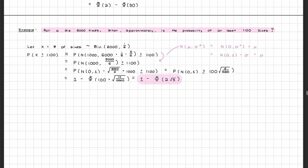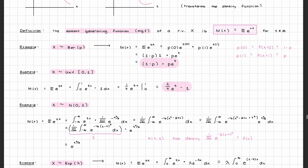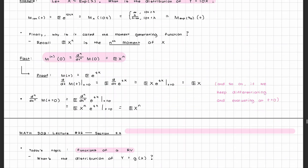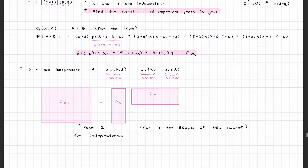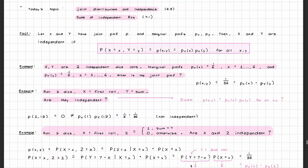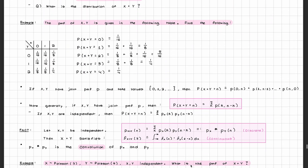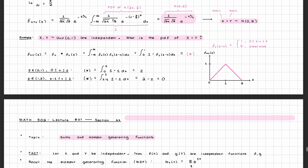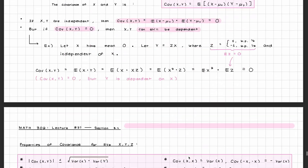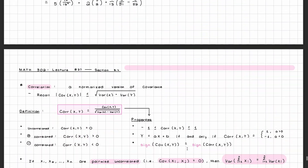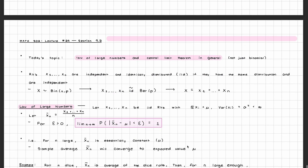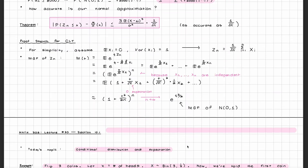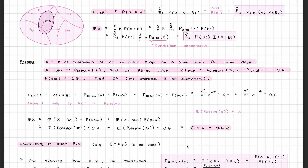Next we cover the moment generating function, which takes a random variable and transforms it into a function of a different random variable. In the final stretch of the course, we cover joint distributions of random variables, sums of independent random variables, covariance and correlation between random variables, tail bounds and limit theorems, and conditional distributions. And let's just say that this was the part of the course that I did not understand at all and still don't to this day.